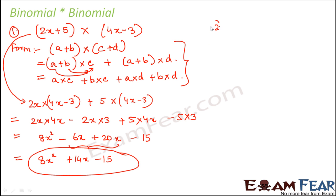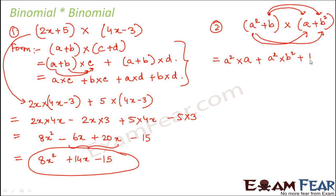Let us take one more example. Suppose you are given a² + b and you have to multiply it to a + b². How would you go about it? Again the same thing. This particular term should get multiplied to each term of the next expression. Similarly this particular term should get multiplied to each term of the next expression.